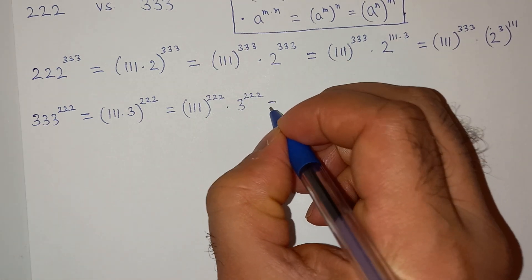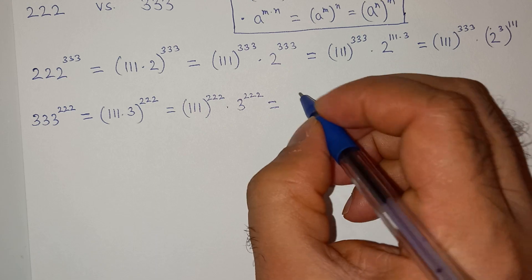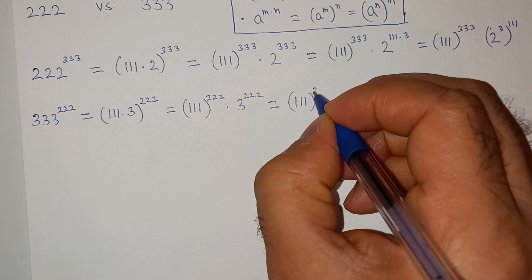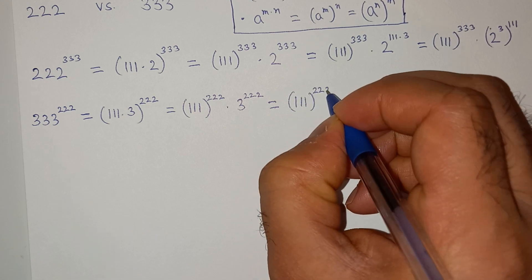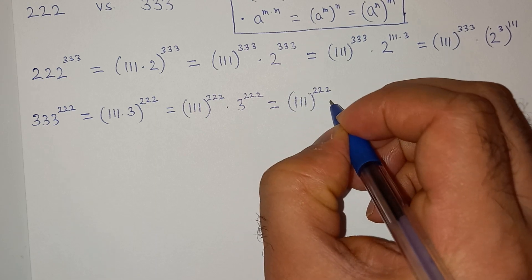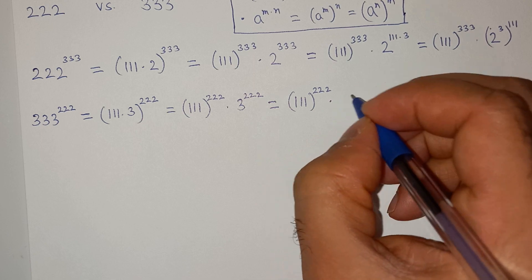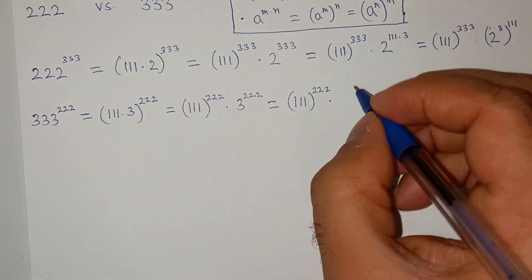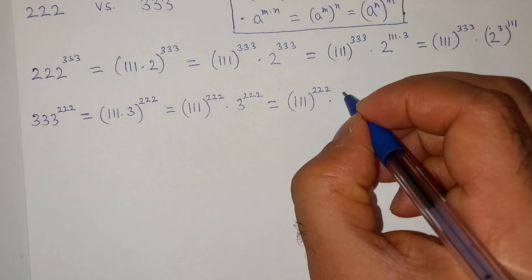Equals to triple 1 power triple 2, 3 power triple 1 multiplied 2. Now this power can be written as...